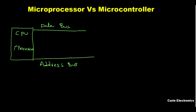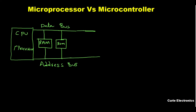What about memory like RAM? RAM is added externally. The designer chooses what size of memory he wants, what ROM he wants, what type and size of RAM is required — all are chosen by the designer. He has the freedom to choose the required memory, peripherals, I/O ports, and timers, all of which are added externally using the bus system.